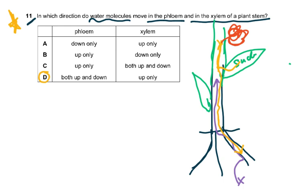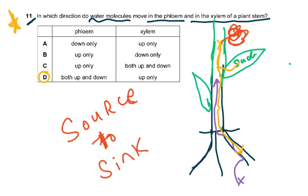In the xylem it only goes upward. In the phloem, different tubes carry sucrose in different directions — it's not the same tube going both ways. Some phloem tubes carry sucrose up to a flower, others carry it down to the roots. The concept is source to sink: the leaf is the source where photosynthesis occurs, and the roots or non-photosynthetic structures are the sinks.